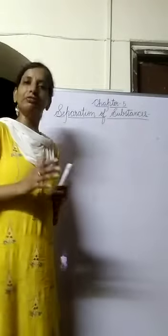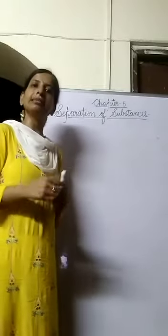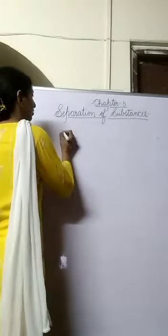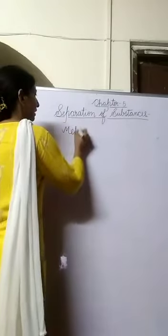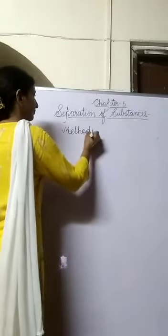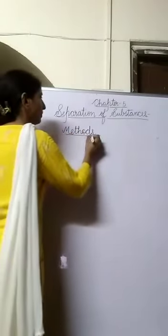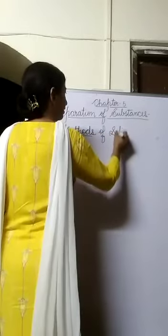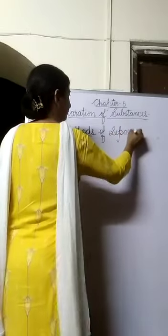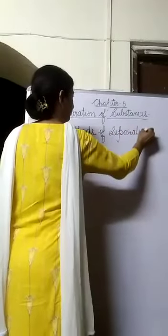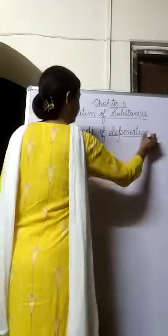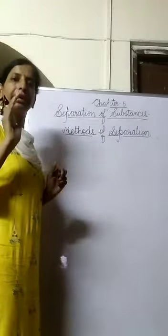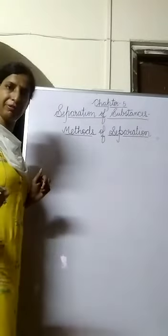Some of the methods of separation are given in your chapter and we will discuss them one by one. Now we are going to discuss methods of separating substances. Why do we need to separate substances? To get useful components and to remove harmful components.